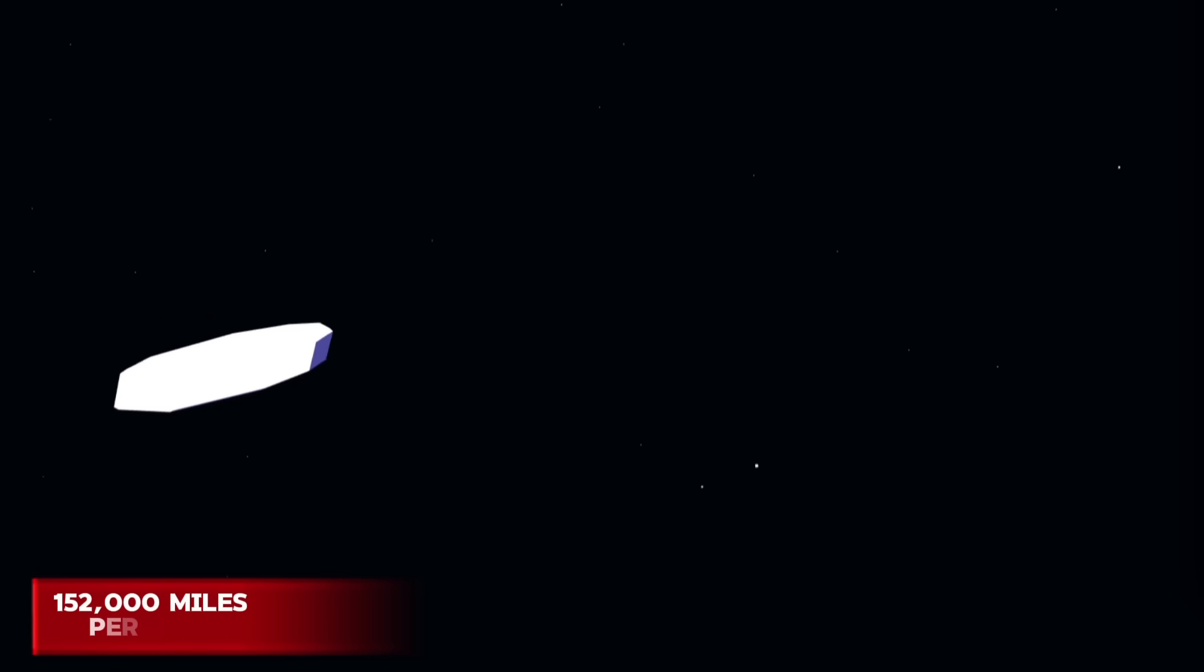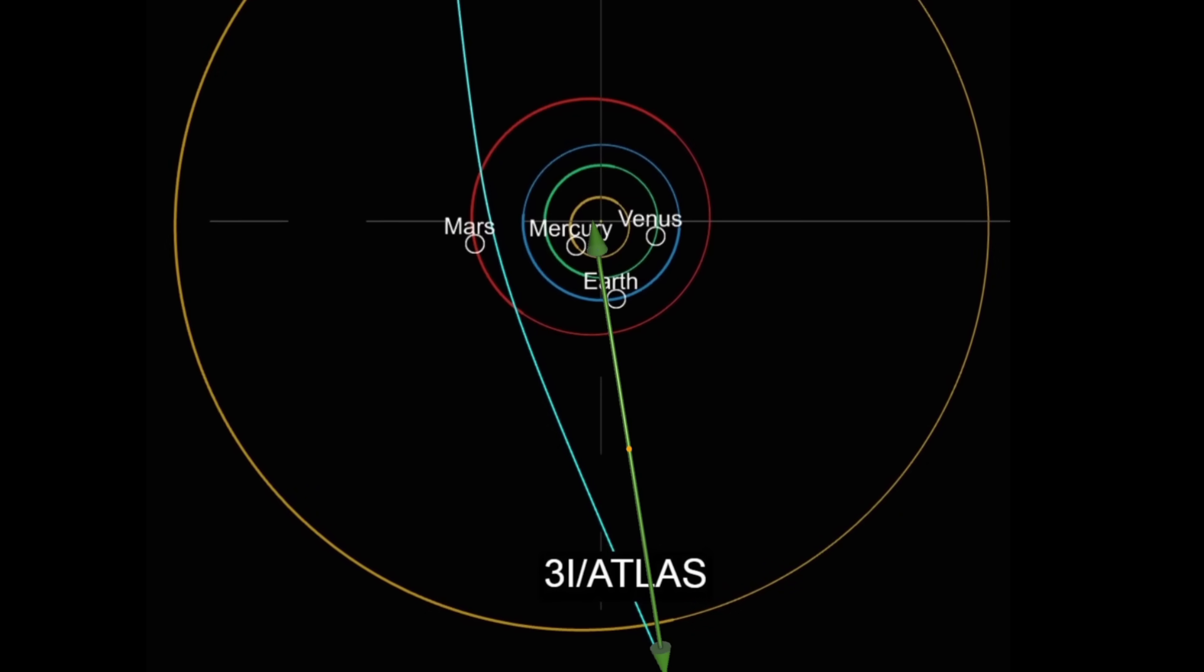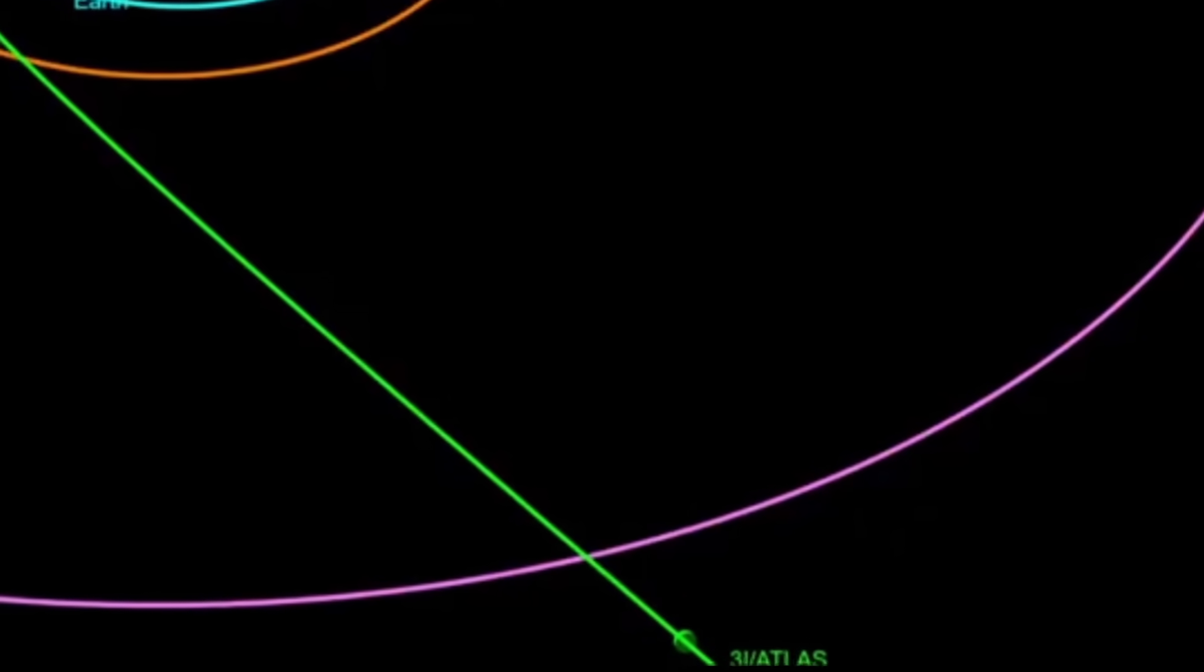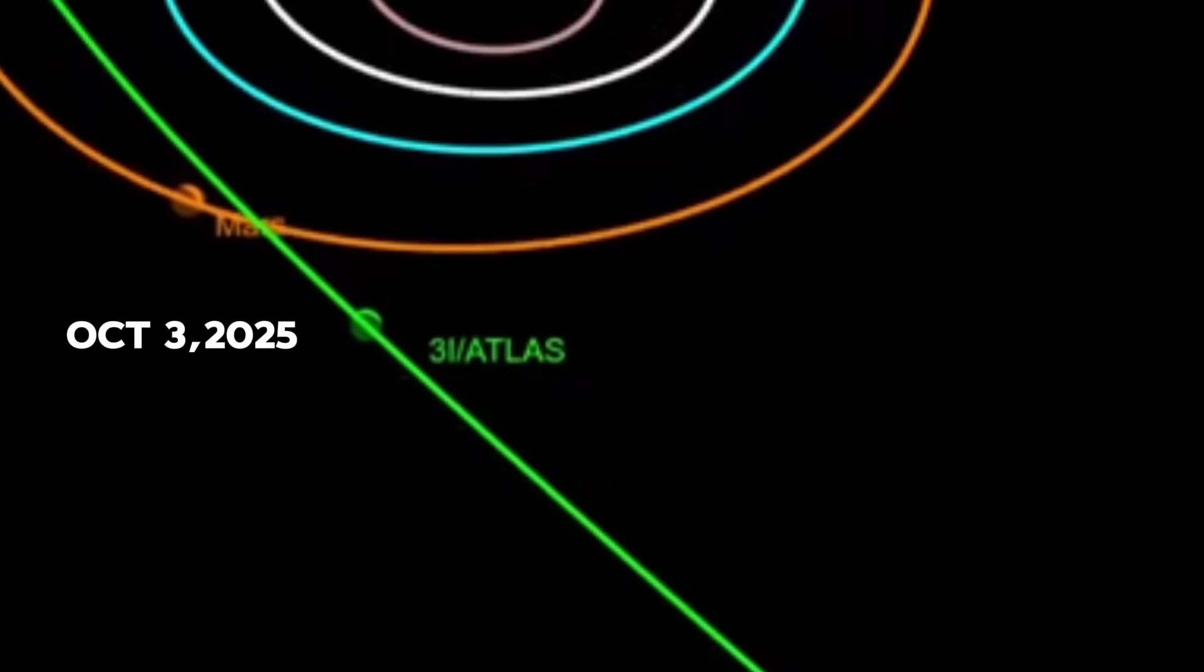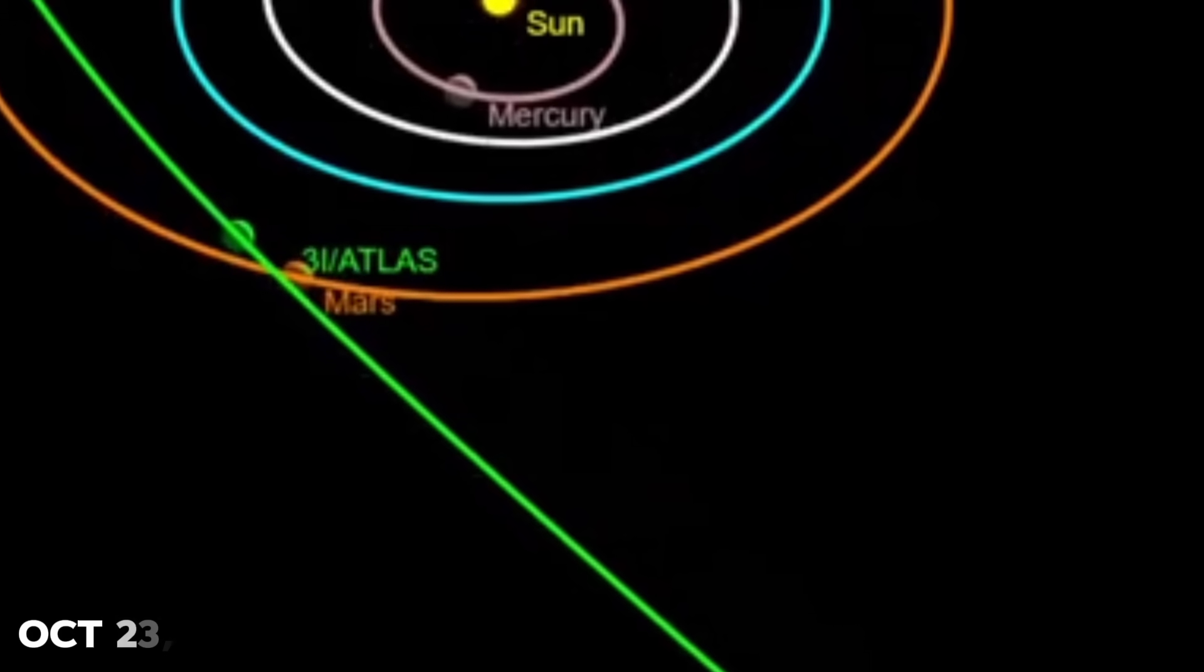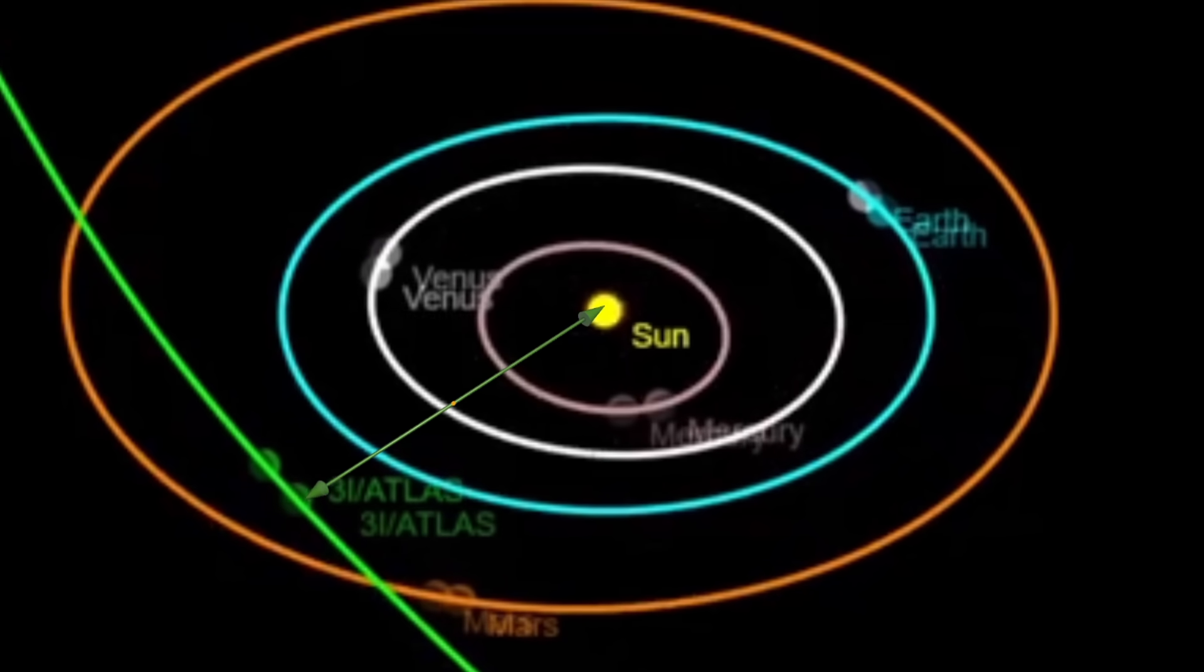At the moment, this object is moving through the solar system at an incredible speed of about 152,000 miles per hour. It's currently about 3.8 times farther from the sun than Earth is. Its first close planetary encounter will be on October 3rd, 2025, when it passes near Mars. Then, on October 23rd, it will reach its closest point to the sun, coming within twice the distance between Earth and the sun.